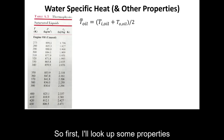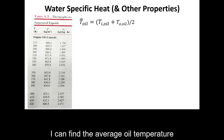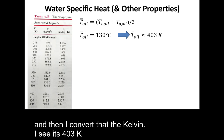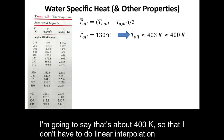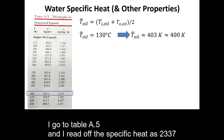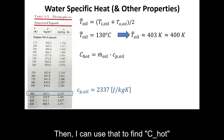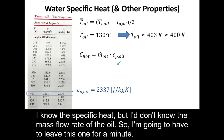First I'll look up some properties. I find the average oil temperature and convert it to Kelvin — it's 403 Kelvin, which I round to 400 to avoid linear interpolation. From table A.5 I read off the specific heat of oil as 2337 J/(kg·K). I know the specific heat but not the mass flow rate of the oil, so I'll leave capital C for oil for a moment.